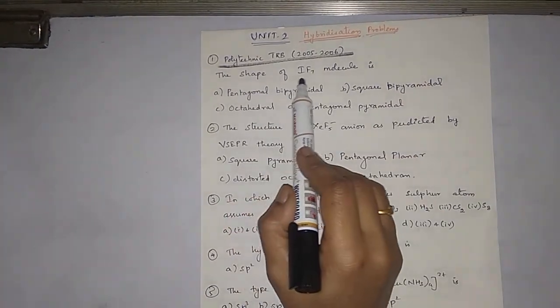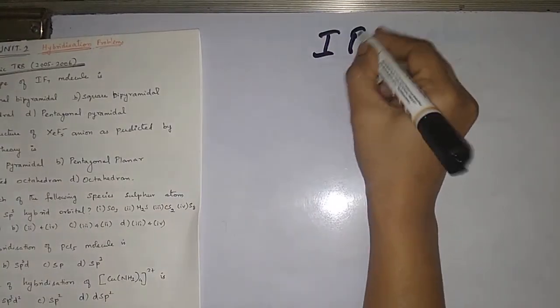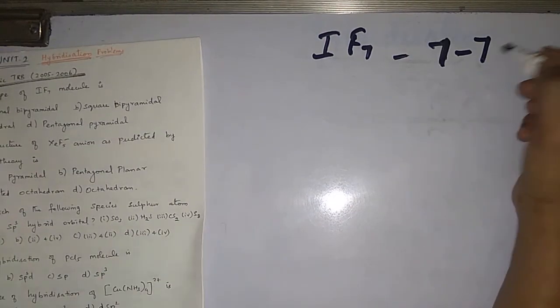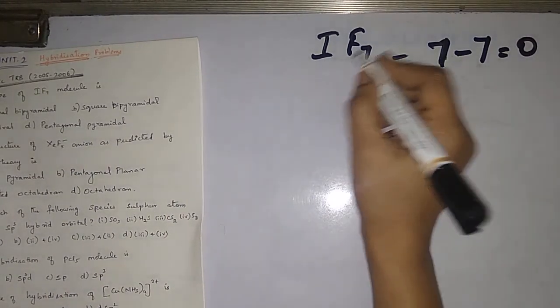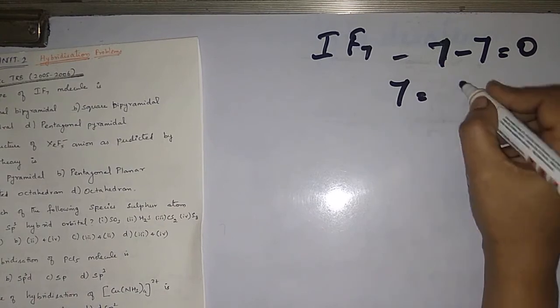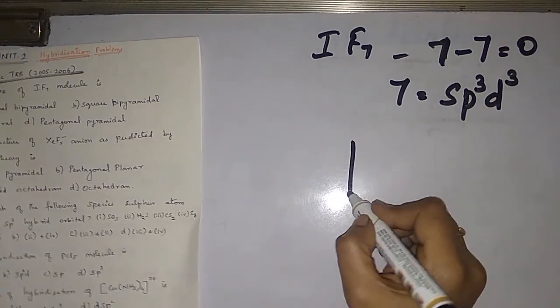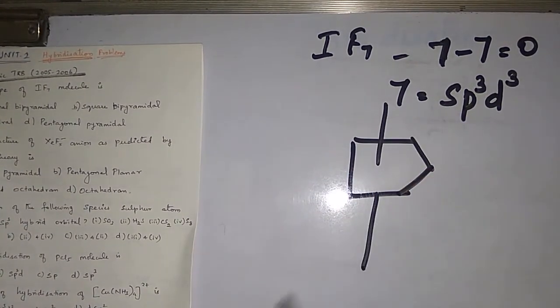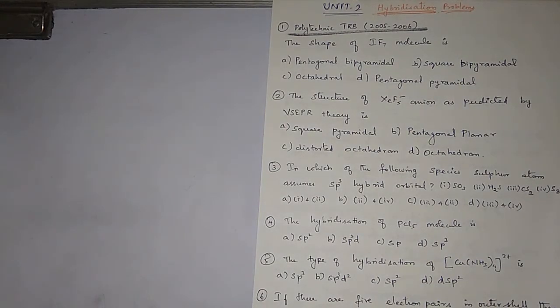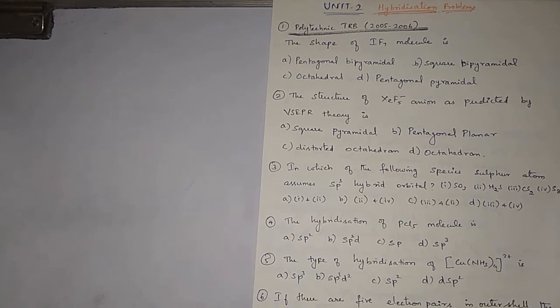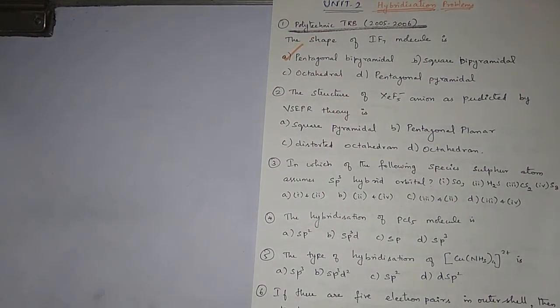The first question: what is the shape of the IF7 molecule? Iodine has 7 valence electrons, minus 7 bonded atoms, so there is no lone pair — zero lone pairs. Seven bonded atoms means sp3d3 hybridization. The base structure for this is pentagonal bipyramidal, which is also the shape they are asking for.